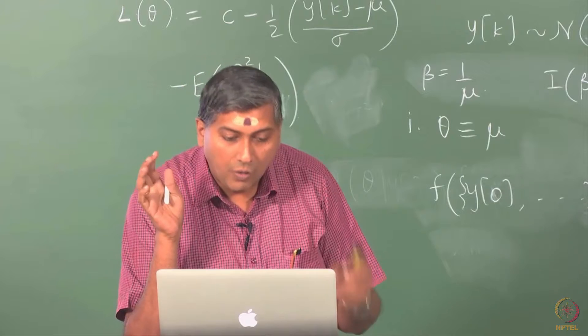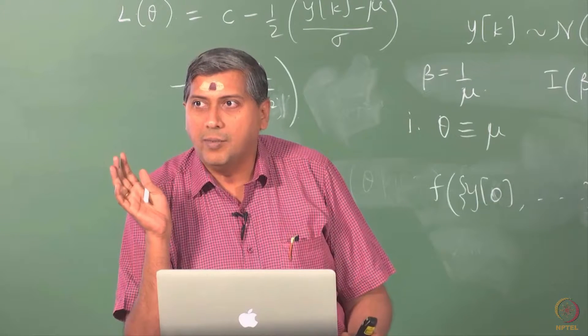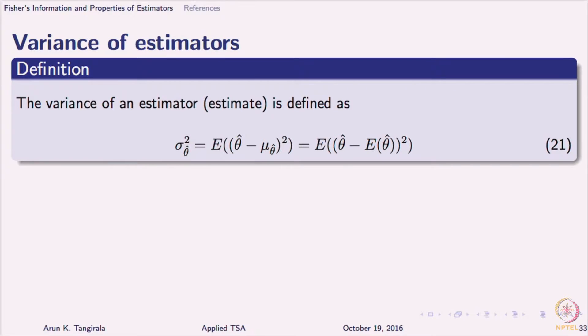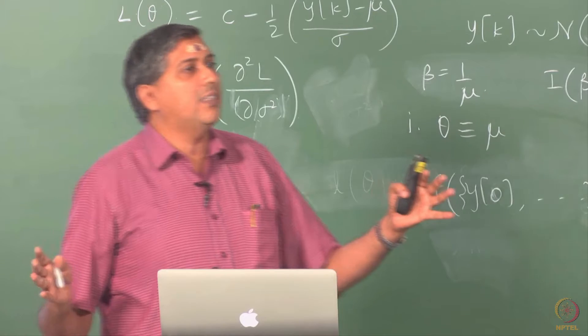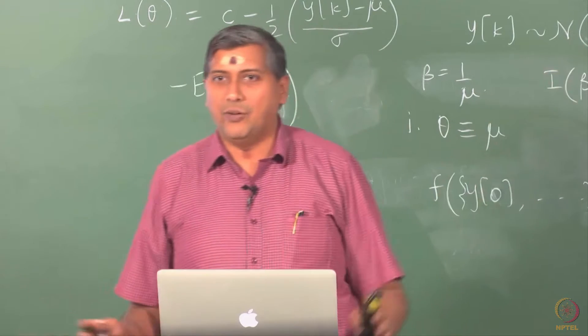I am going to skip this. The variance of the estimator again has the same story behind it. We have already defined what is variance. Variance is nothing but the spread of the estimate around its own average across data records. The moment you see expectation of something, you should imagine different data records.